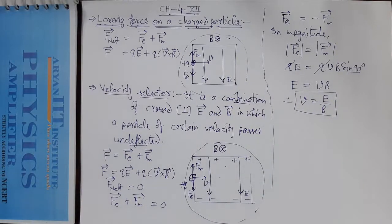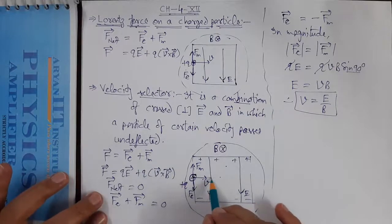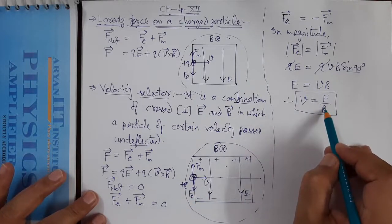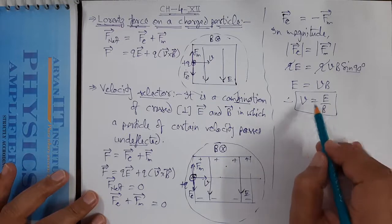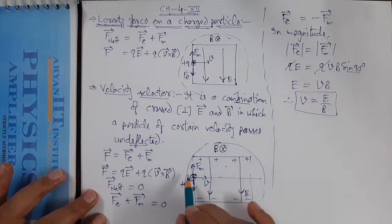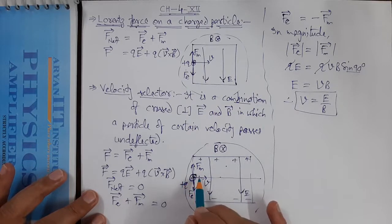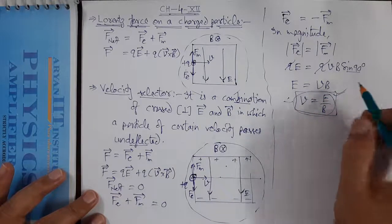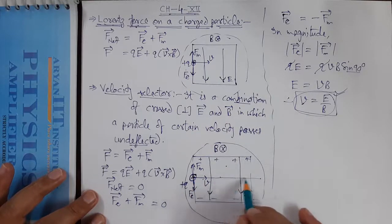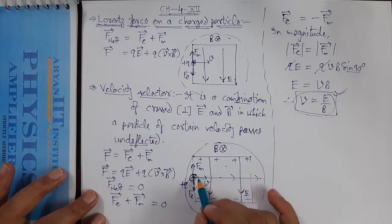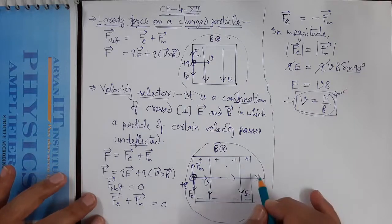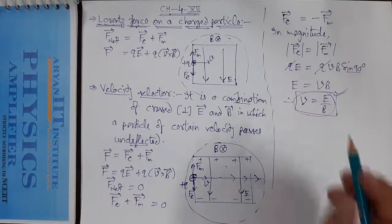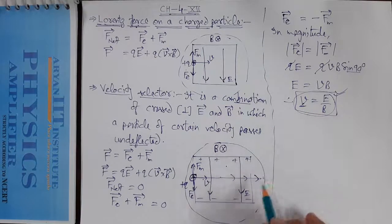So the velocity of the particle that passes undeflected through this crossed E and B combination is V = E/B. Only particles satisfying this condition will pass undeflected; other particles with different velocities will be deflected to one side or the other. This way we obtain a beam of particles with a specific, certain velocity.